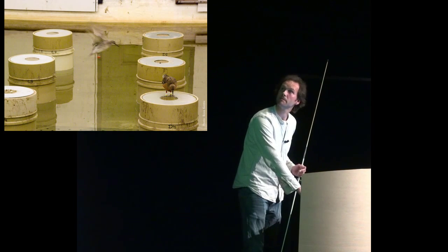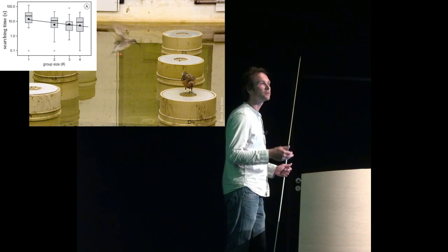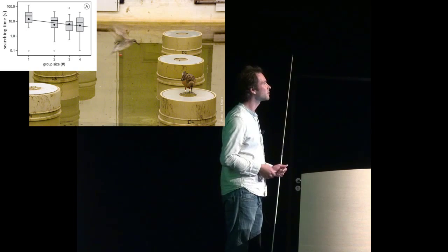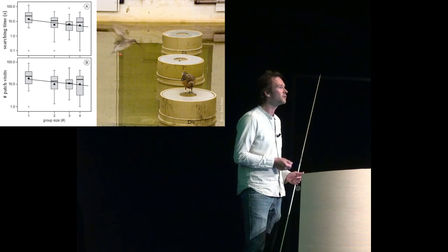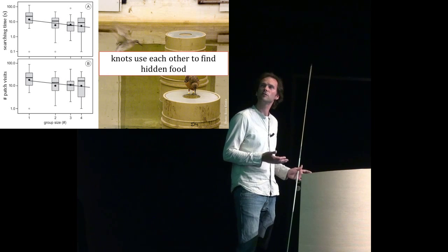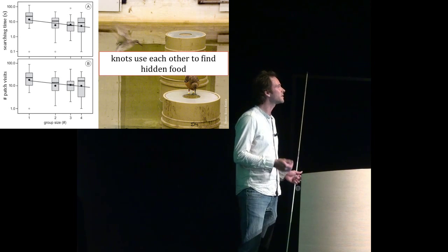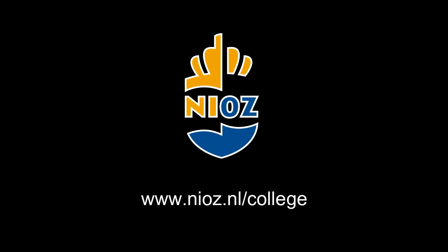We tested them in groups of one to four. Looking at the results: searching time on the y-axis — note it's a logarithmic scale — as a function of group size on the x-axis. You see that the time it takes an individual to find the food patch declines with group size. And also, the number of patch visits before an individual found the food patch also declines with group size. So from these results, we conclude that the knots do use each other to find their hidden food, making them more efficient foragers when foraging in flocks.